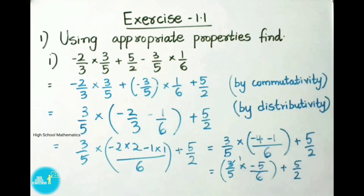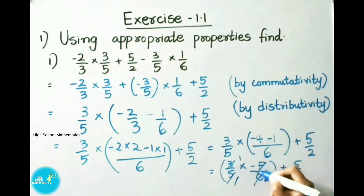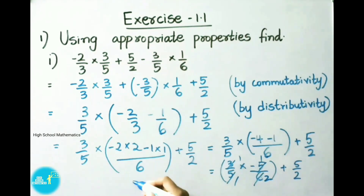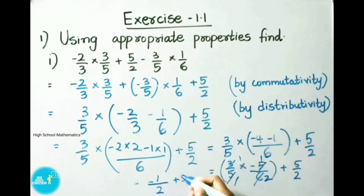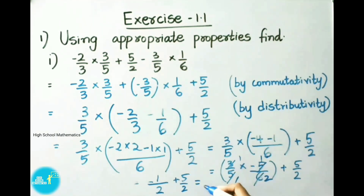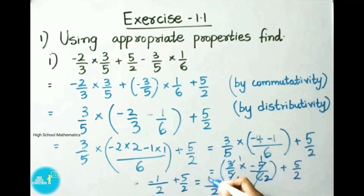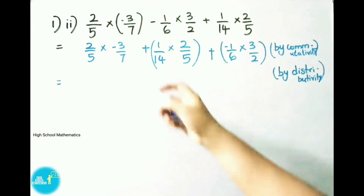That equals to 3 by 5 into minus 4 minus 1, that is minus 5 by 6, plus 5 by 2. Multiply the numerators: 1 into minus 1, that is minus 1 by, multiply denominators: 1 into 2, that is 2. Write on plus 5 by 2. That equals to, here denominators are equal, so write on by 2 and add the numerators: 5 minus 1, that is 4. So the answer is 4 by 2, which simplifies to 2.